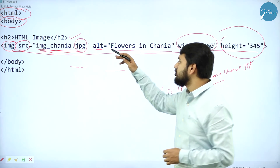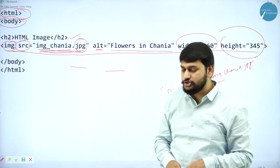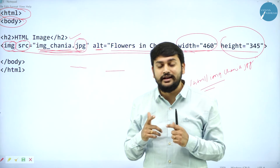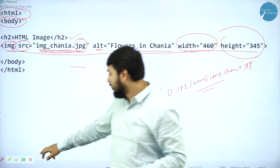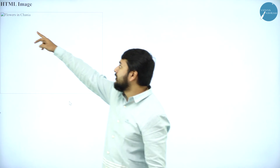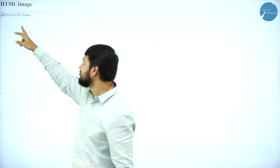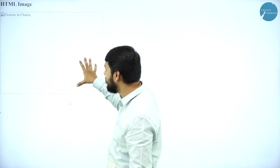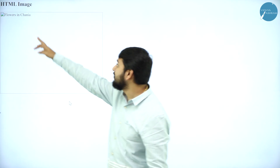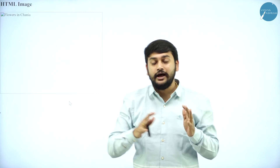I don't have an image right now, but I will show you if the image is not there, how exactly the program will behave. You can see this — this is the alternate text that it is taking because I don't have that image. This is the size of that image that we have given with width and height, but I don't have the image. Suppose if I had the image, the image would have appeared here. I just wanted to show you the alternate text — this is how it works if the image is not there.